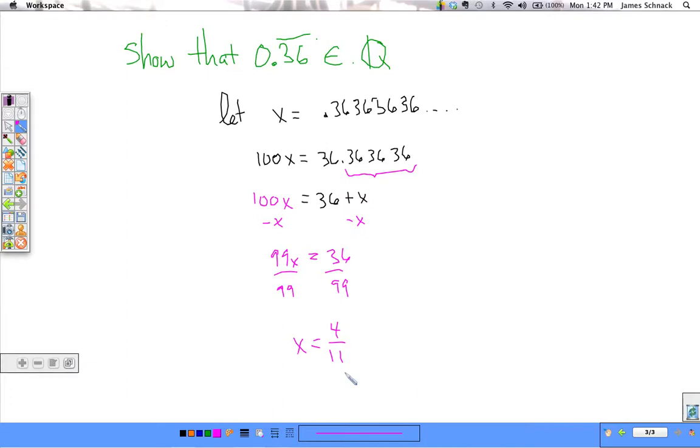We can use this strategy to show that any repeating decimal is a rational number. And what we look at is how many decimal places are repeating. Two in this case, we multiply by 100. If it would have been three repeating decimals, we'd multiply both sides by 1,000. If it was one repeating decimal, we would multiply both sides by 10. So, that's all for this video. Hope you have a good time.